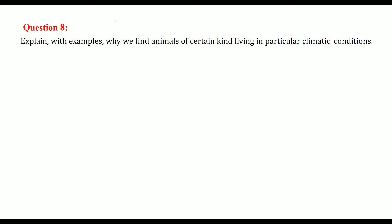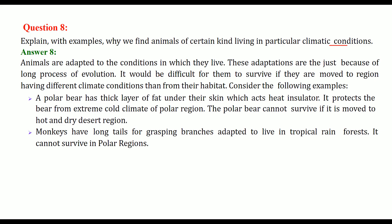Explain with examples why animals of a certain kind live in particular climatic conditions. You will not find a polar bear in Rajasthan or New Delhi, because there is a proper climatic condition for which each animal has adapted. You will not find a penguin in Saudi Arabia. Animals are adapted to the conditions in which they live, and this adaptation is a long process of evolution — if moved to a non-conducive condition, they will not be able to live.